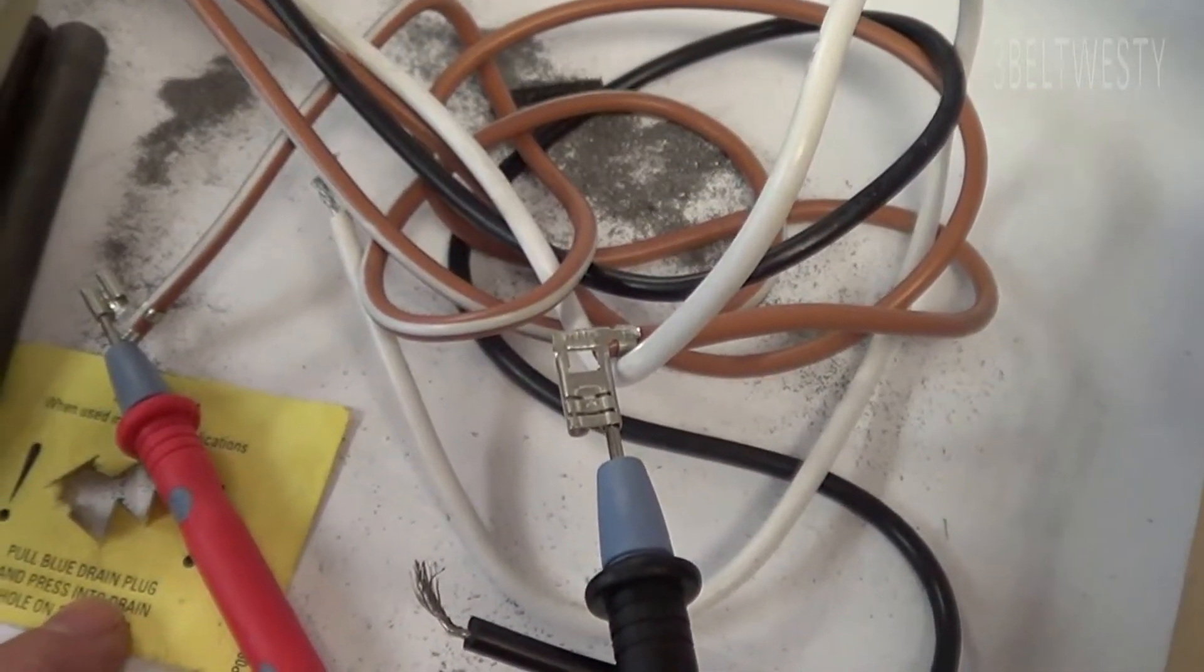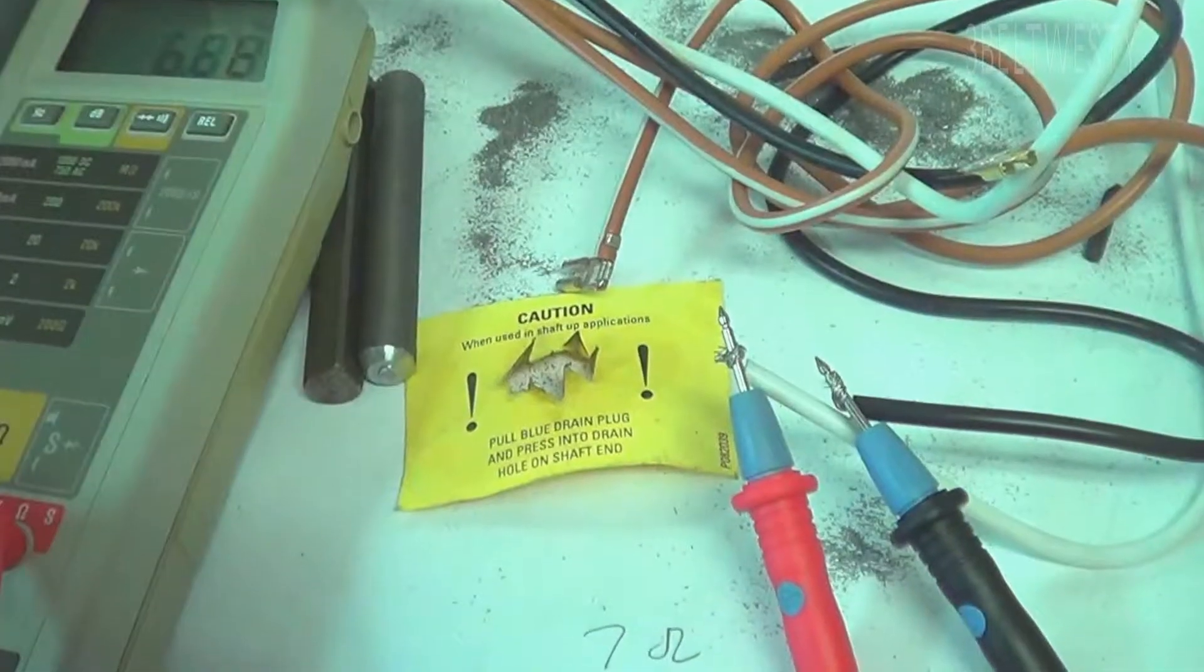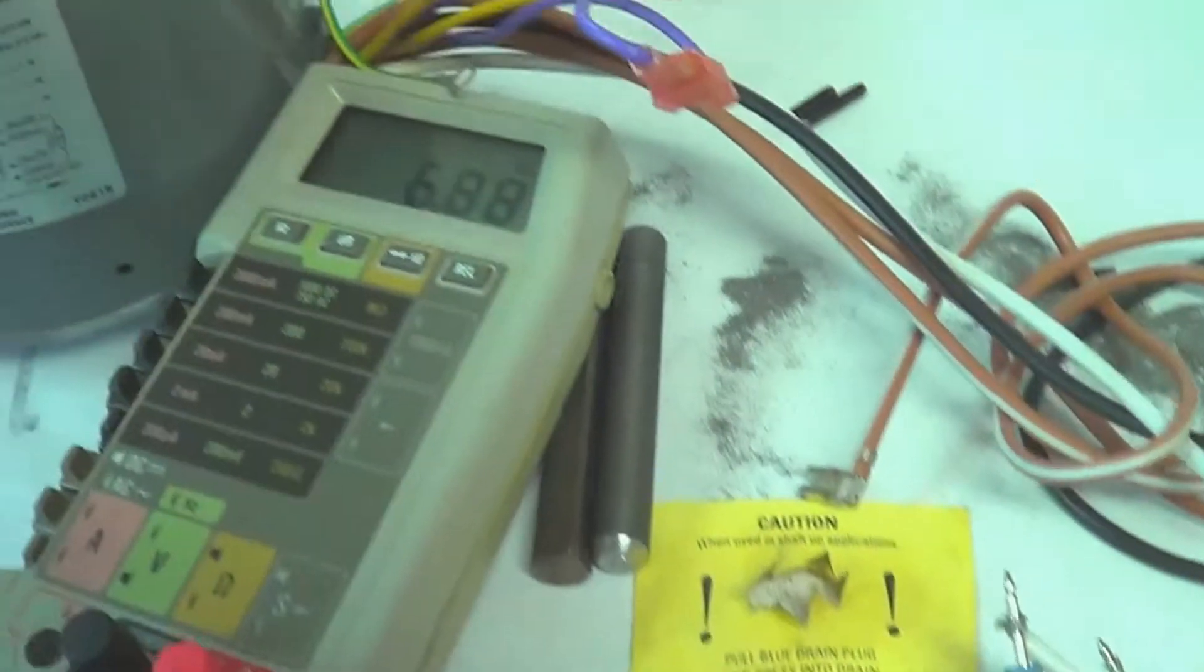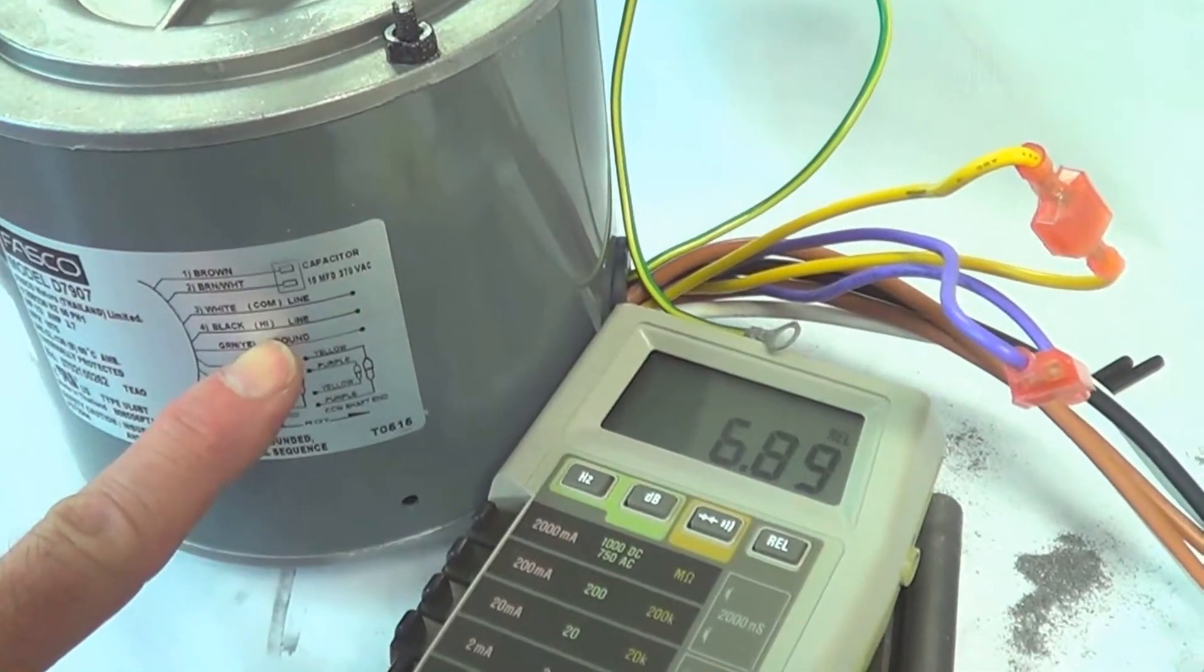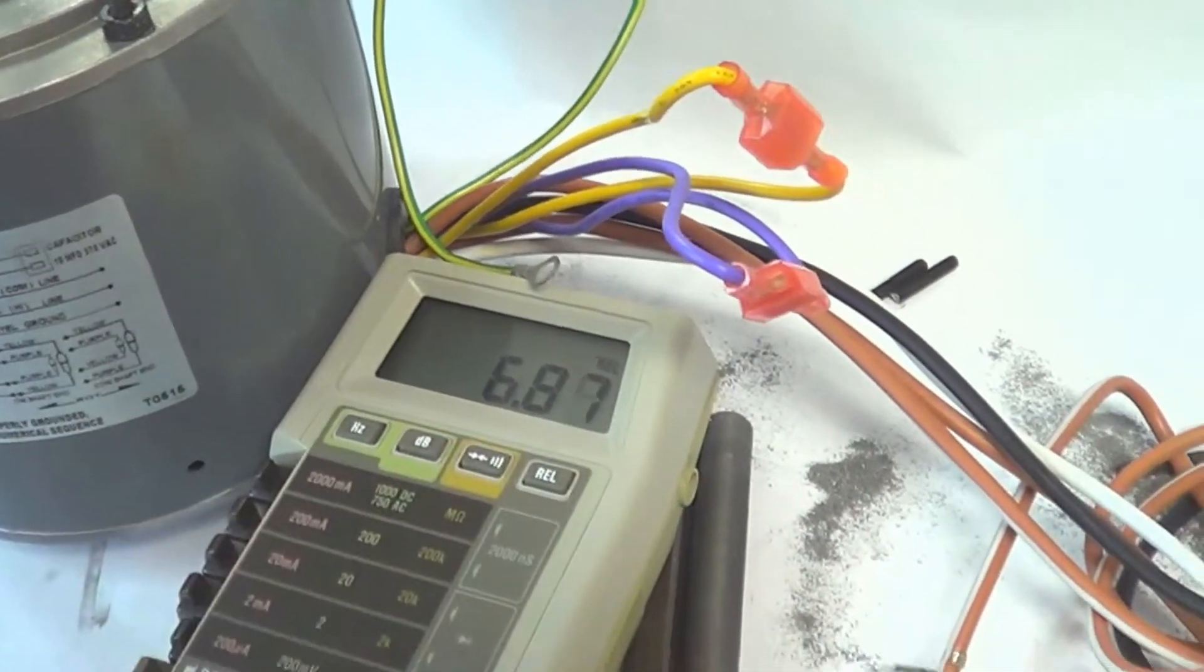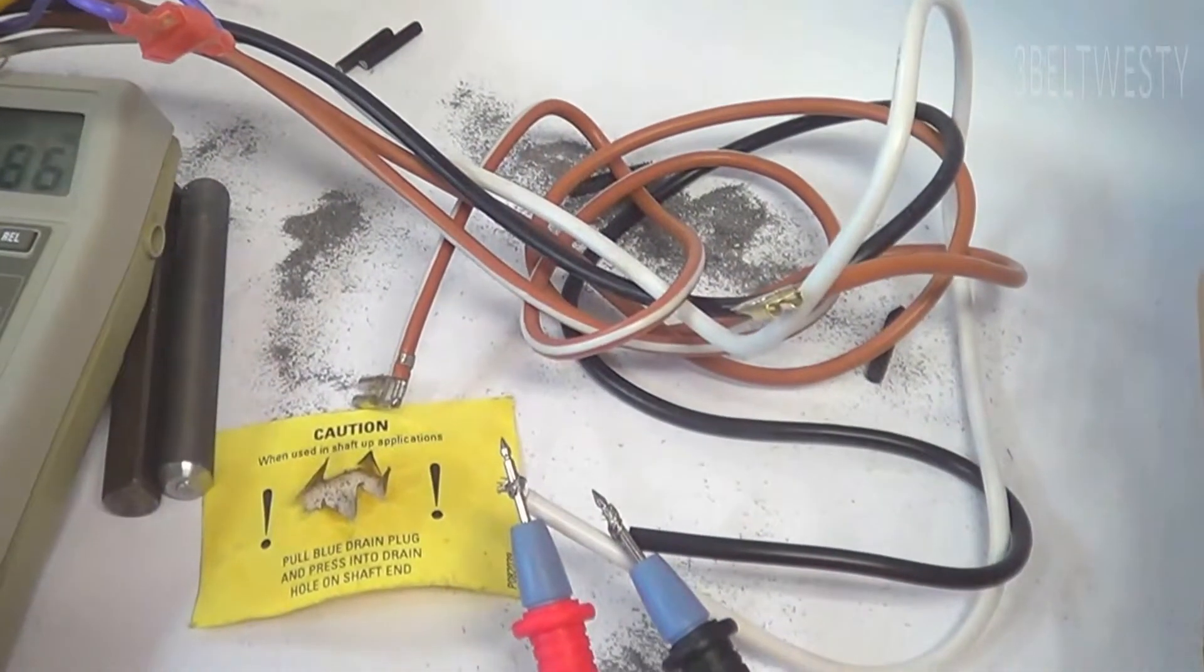That's at room temperature, say about 75 here. Across the white and the black, which is the common, the high, I've got roughly 7 ohms. That's at room temperature.